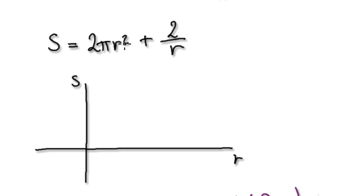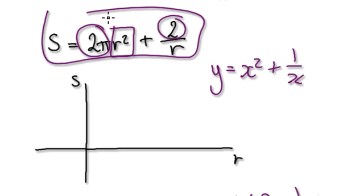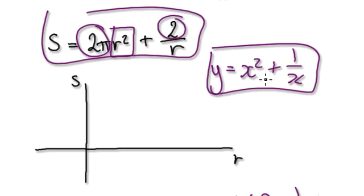Looking at this, it's like sketching a graph of x² + 1/x. This 2π is a constant, this 2 is a constant. This is very similar to that.